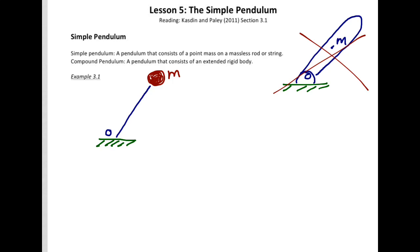All we're going to do is derive the equations of motion of this pendulum, and we're going to stay within a coordinate system we're all used to — a Cartesian coordinate system. We'll call the point mass point P with mass m. The origin is at point O, where the massless rod is affixed, and the rod has length L.